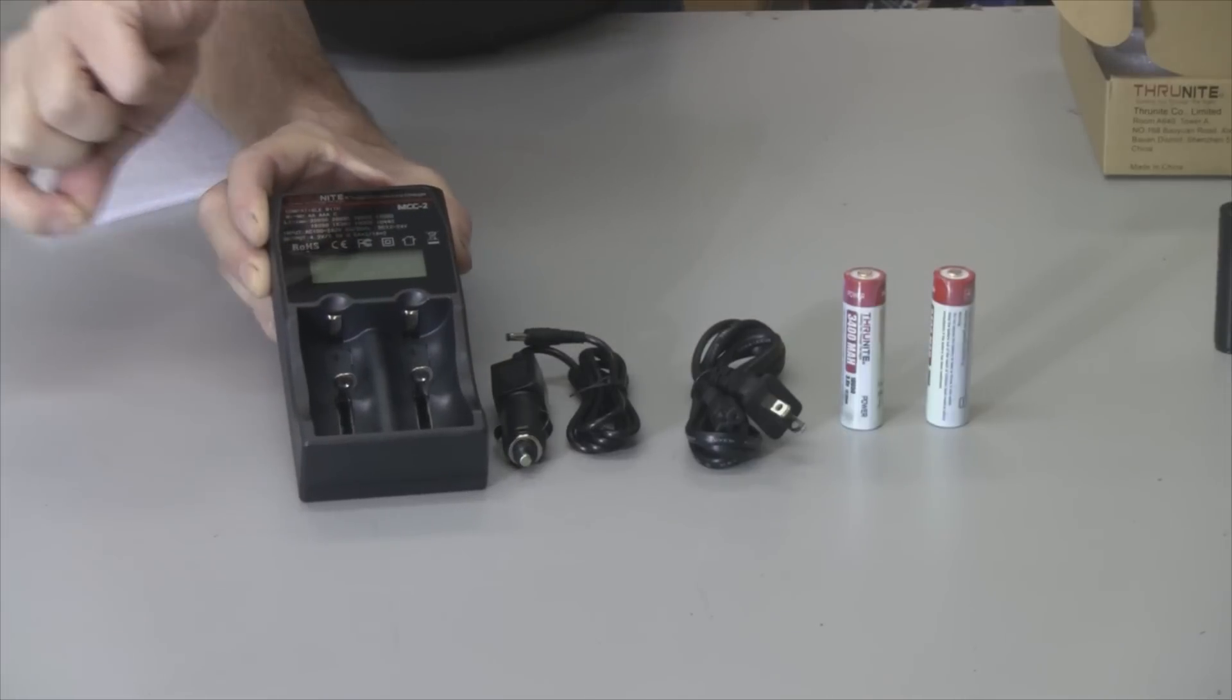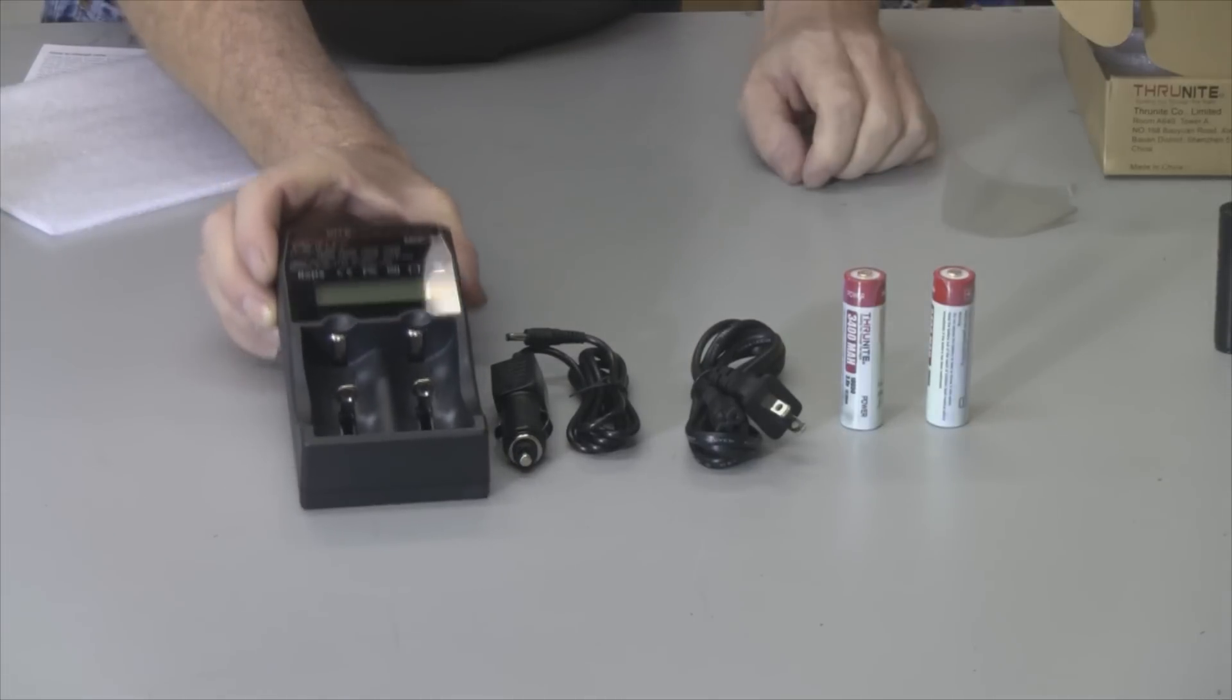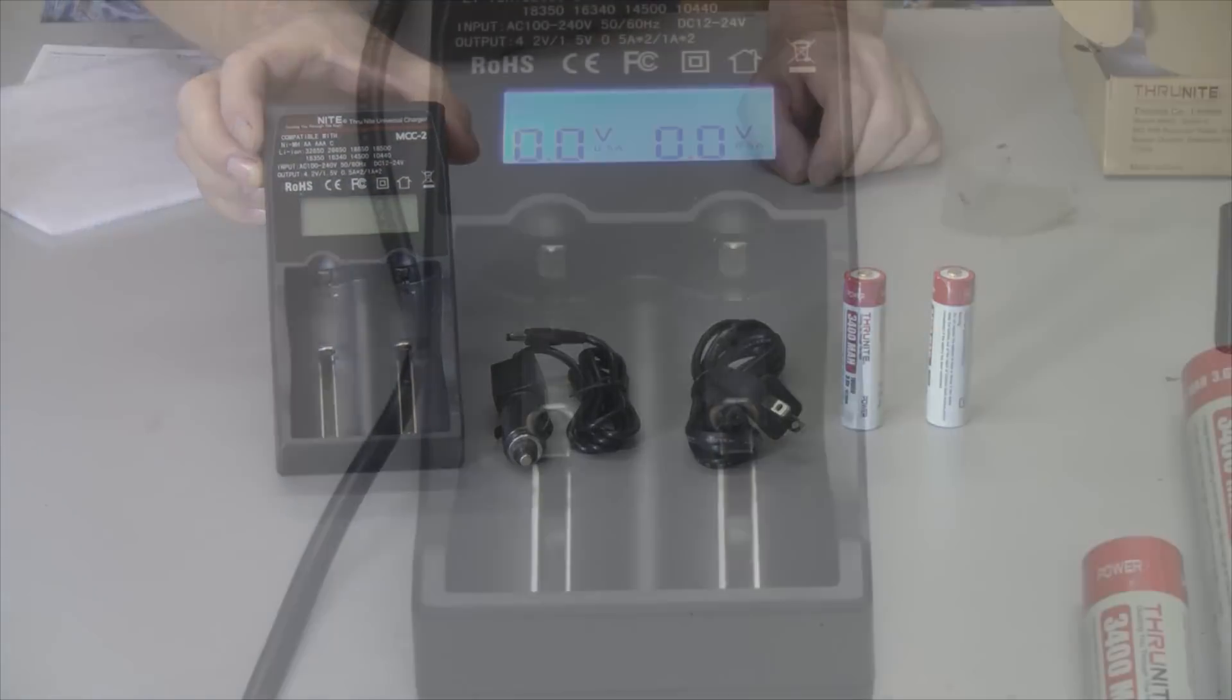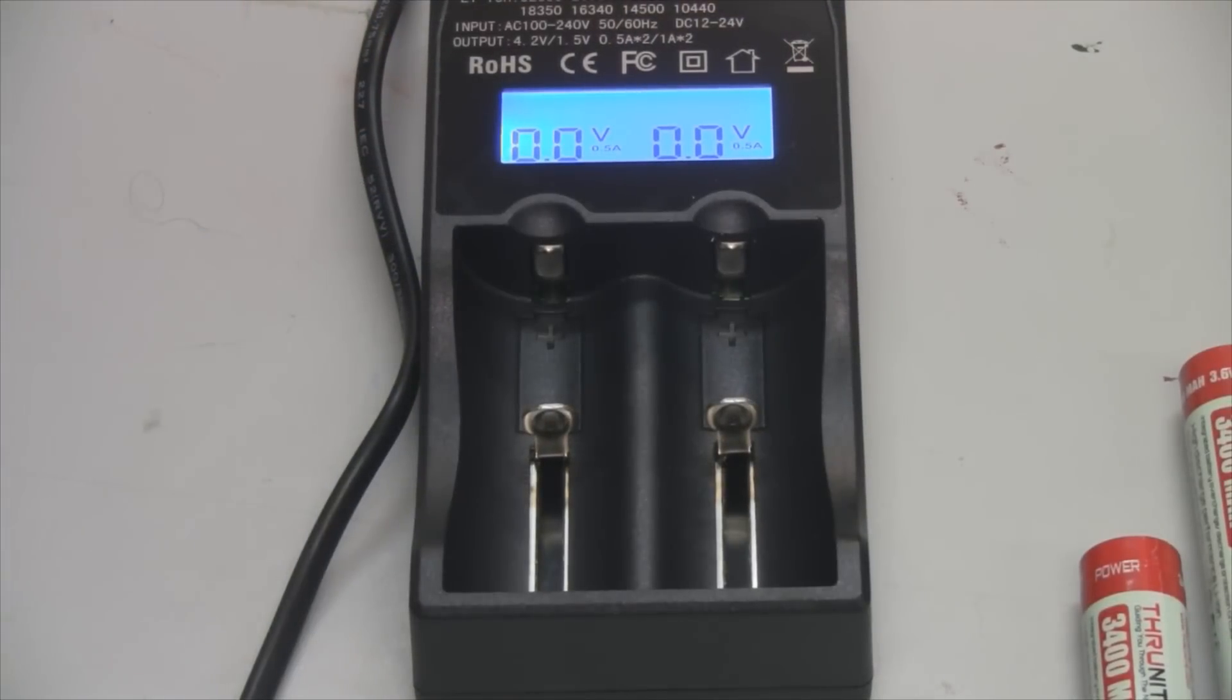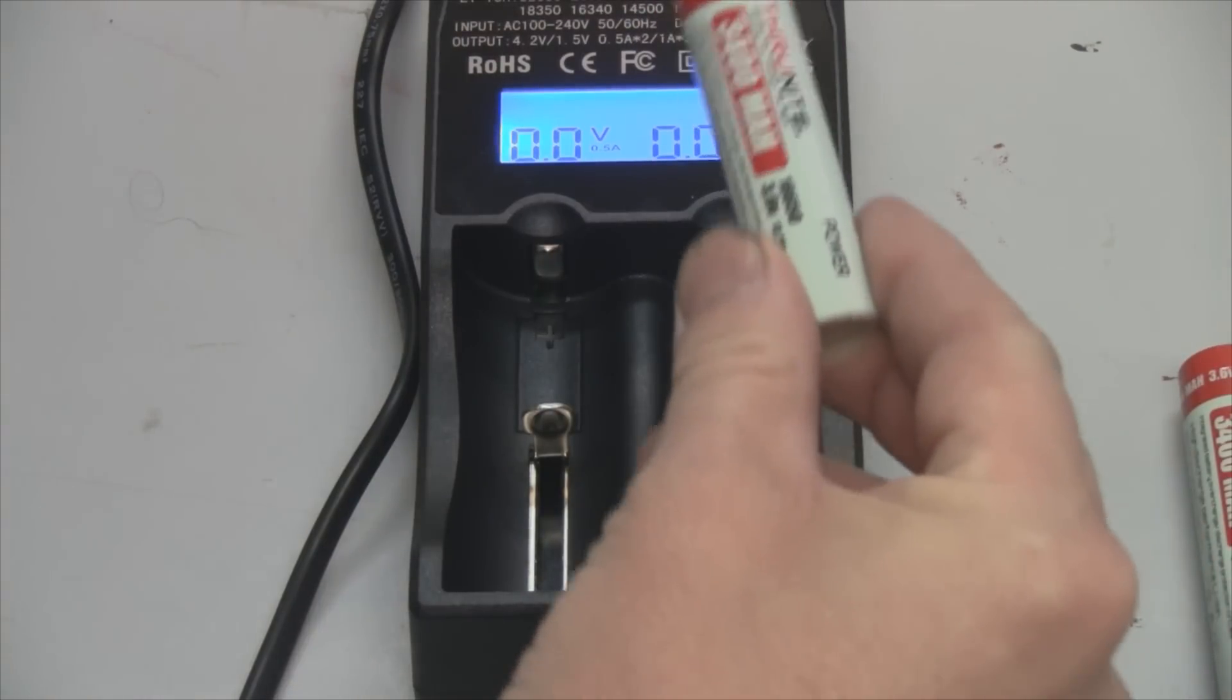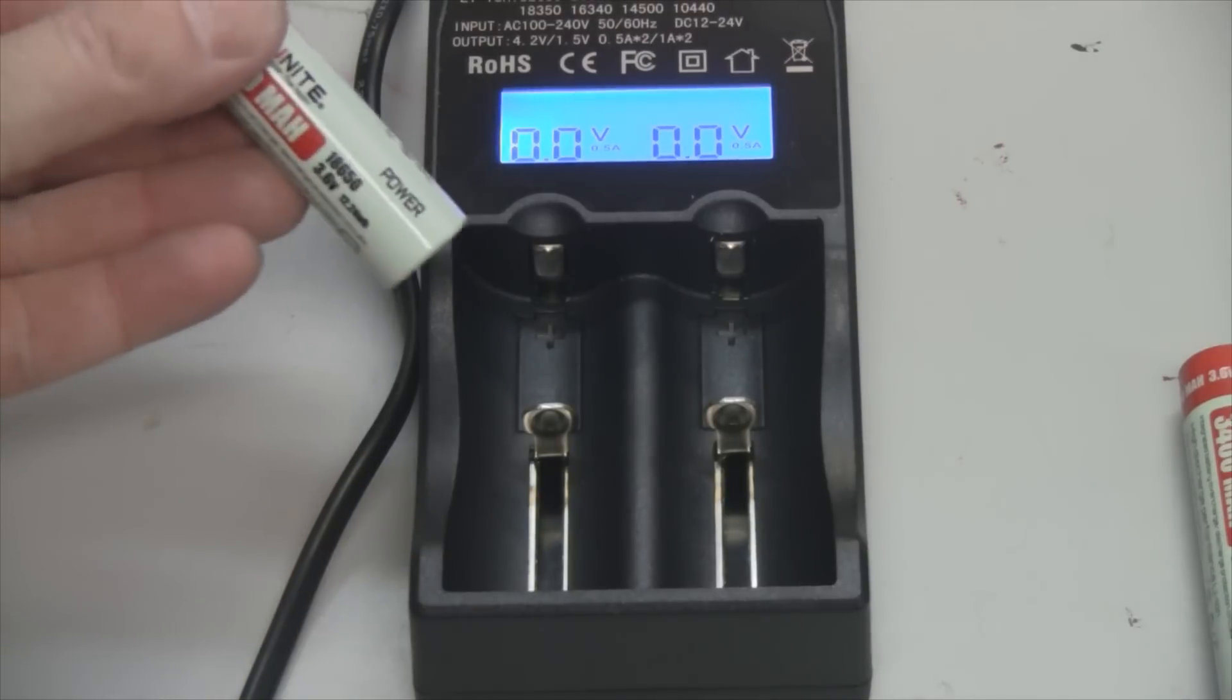Let's plug this in and start charging some batteries. I have the unit plugged in now and as you can see, it has a nice LCD display with big numbers that's backlit. Here's the batteries that came with the kit from Thrunite, and you just pop it in and it'll identify the battery, how much it's charged, and give you the current charging status.